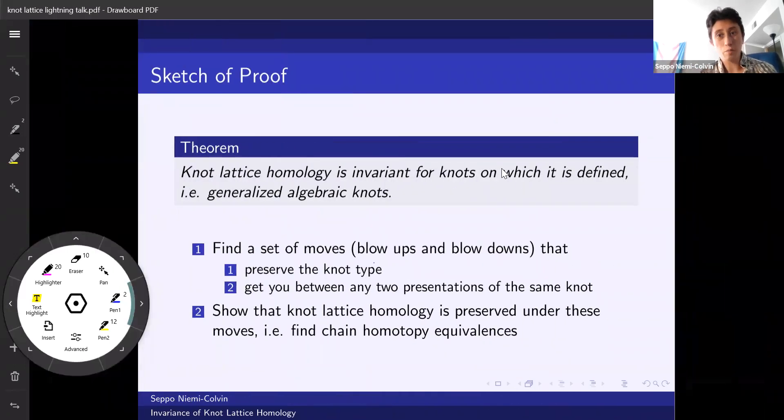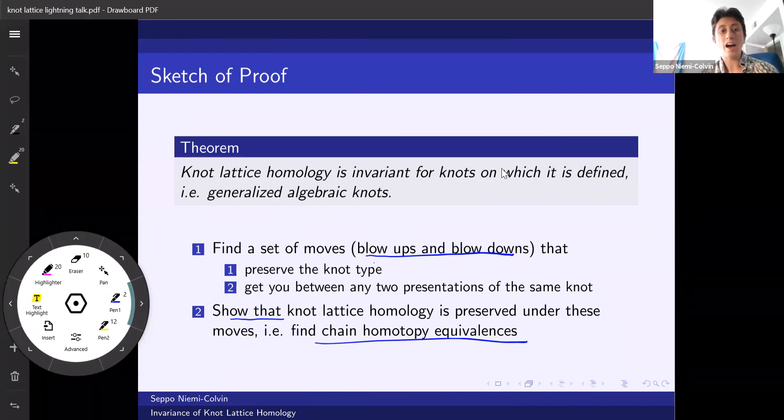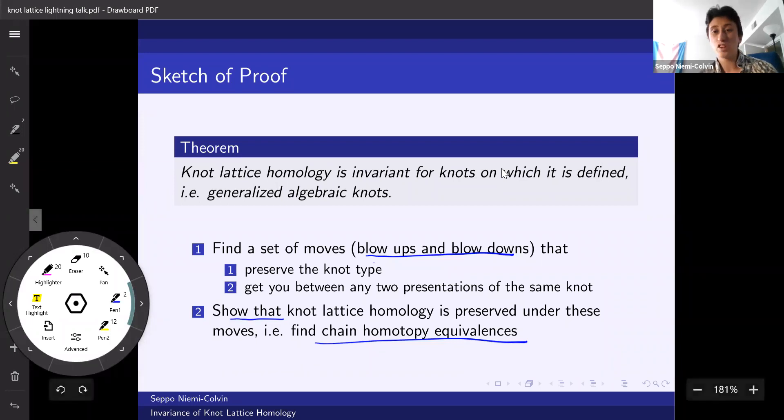Now, a sketch of the proof for invariance. One first finds a set of moves, in our case blow-ups and blow-downs, that preserve the knot type and get you between any two presentations of the same knot. Think Reidemeister moves, but for graphs instead of knot projections. Then, I find chain homotopy equivalences between the before and after for these moves, so that we have that knot-lattice homology is actually preserved under them.